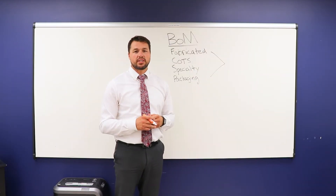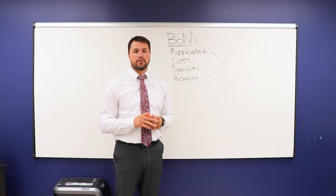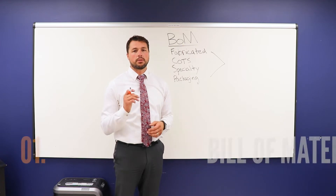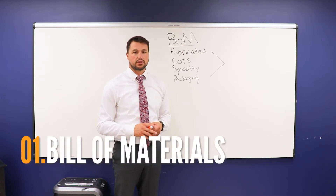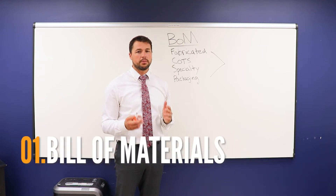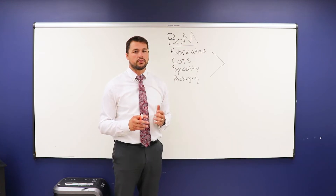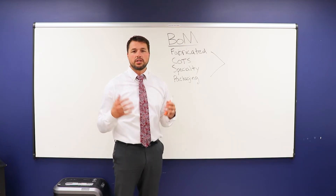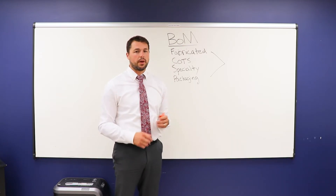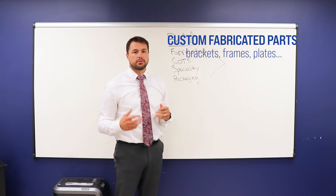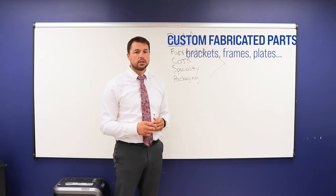The first thing I do when determining an estimate of costs for a piece of machinery or equipment is to look at the bill of materials. Typically in a machine there are a few categories of goods, these being custom fabricated parts like brackets, frames, and plates.